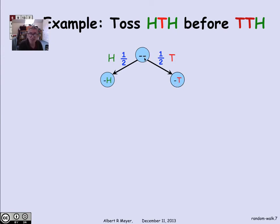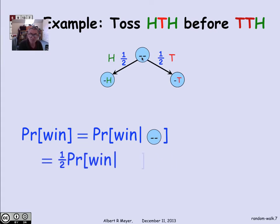But I can already say something about the probability of tossing HTH before TTH, namely the probability of winning. Probability of winning is the probability of winning, given that I start at the start state with no prior flips. But the probability that I win starting here is simply the probability that I win starting at the state nothing H or the probability that I win at the state nothing T, with the two probabilities weighted equally since this is a fair coin, and there's a 50-50 chance of going each way.